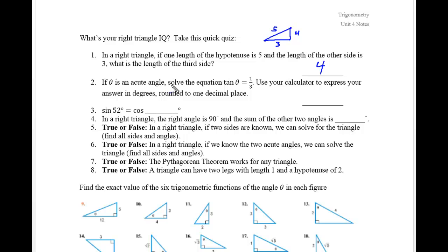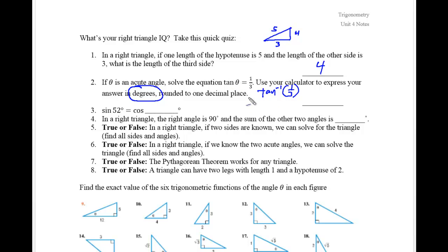Problem number two: if theta is an acute angle, solve for tangent of theta equals one-third. Use your calculator to express the answer in degrees, rounded to one decimal place. You may not have put your calculator in degree mode — it's set up in radian mode by default. Go to the mode key and change it to degrees. You should type in the inverse tangent of one-third. The inverse tangent finds the measurement of theta, so the answer is 18.4 degrees.